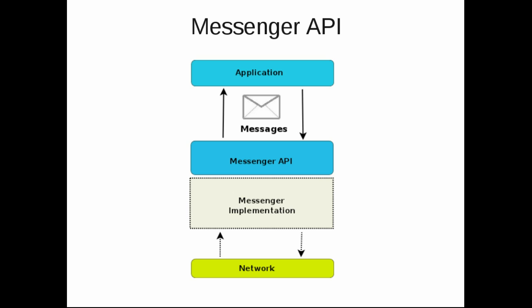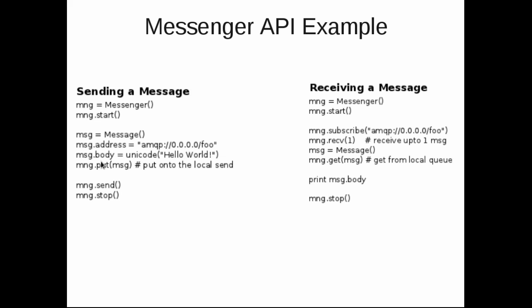Now let's look at the Messenger API. It's a very simple API for sending and receiving messages. The application will primarily be working with the messenger and the message objects. With a few lines of code, you can easily add MQP support to your application. This example is written in Python. On the sender side, you create a messenger and start it, create a message object, specify the address, specify the message content, and simply send it. On the receiver side, you create a messenger object, start it, subscribe to a particular address, and then start receiving messages. It's as simple as that.